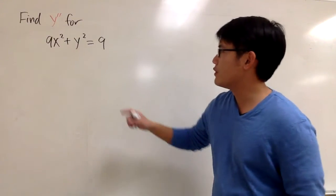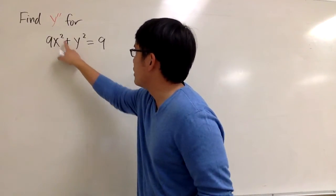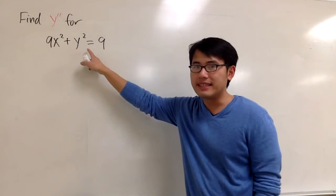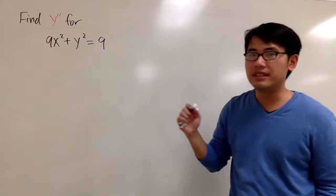Let's see how to find the second derivative for this equation, 9x² plus y² is equal to 9. We can see that the y is not isolated, so we can use implicit differentiation.